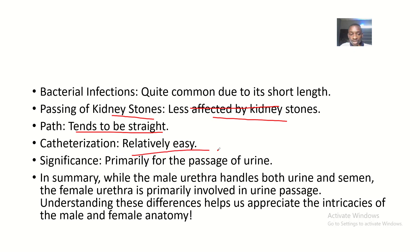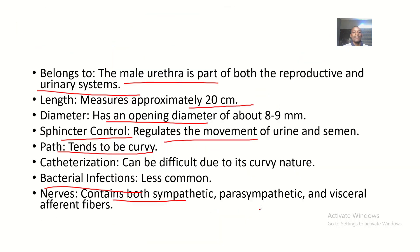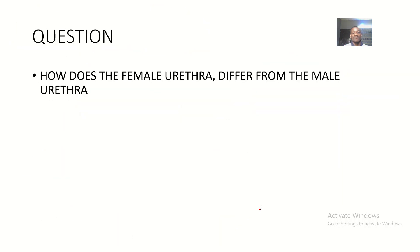The female urethra tends to be straight, unlike the male urethra which is curvy. Catheterization is easy because the urethra is short. Its significance is primarily for the passage of urine. In summary, the male urethra handles both urine and semen, while the female urethra is primarily just for urine passage. Understanding these differences helps us appreciate the intricacies of male and female anatomy.